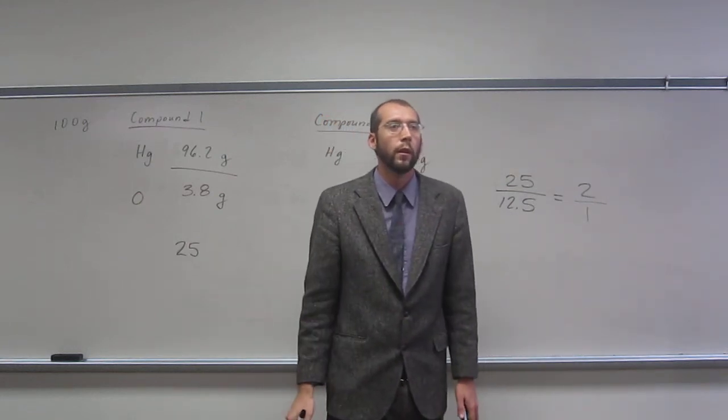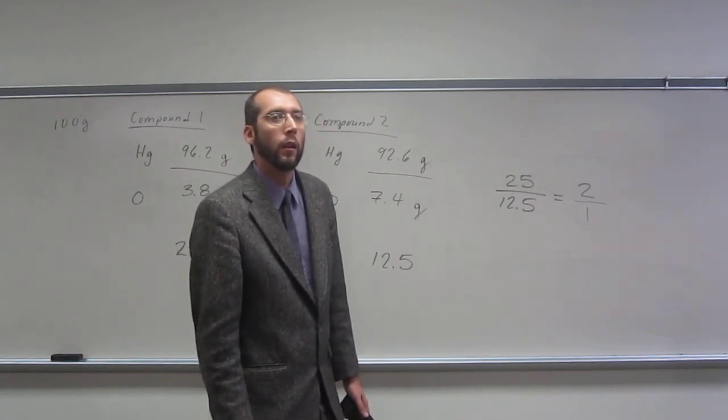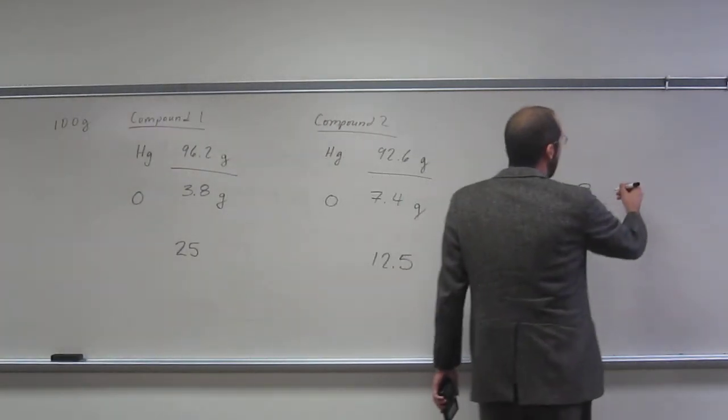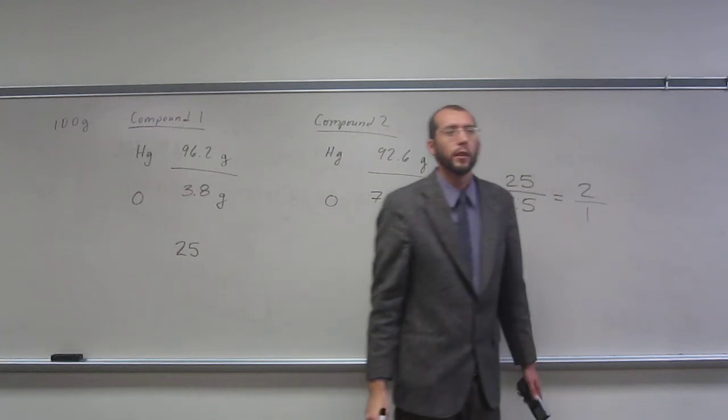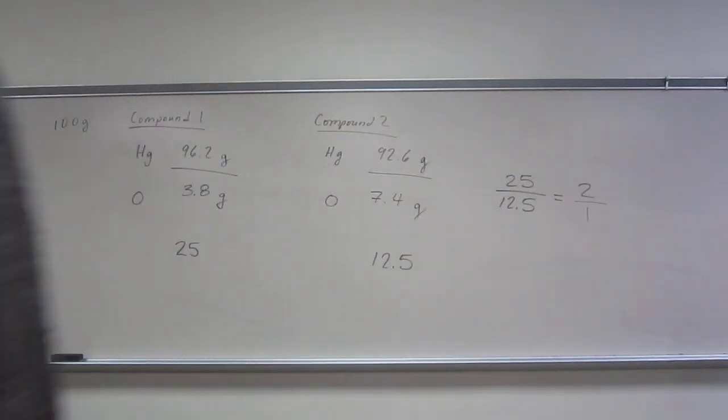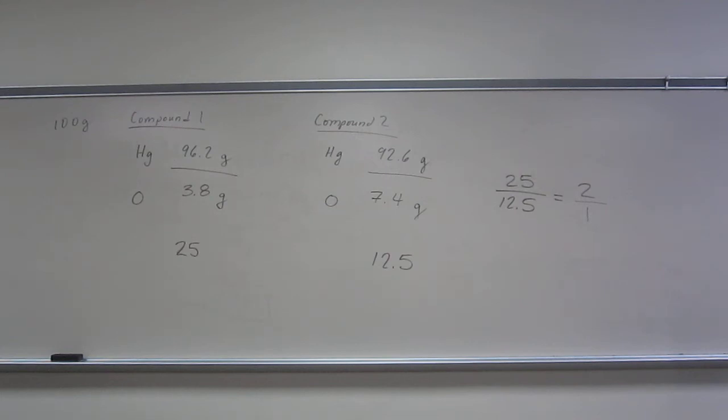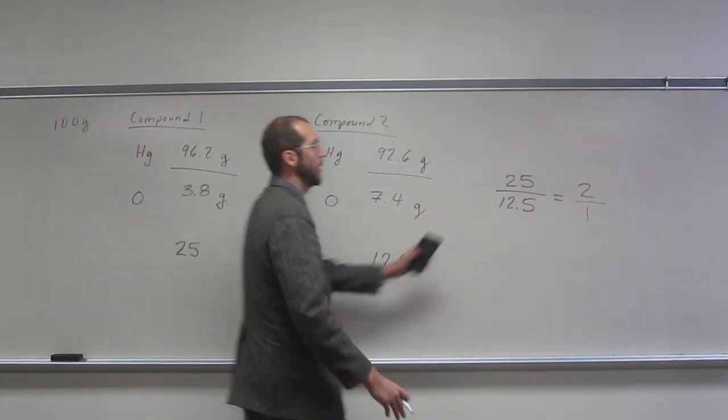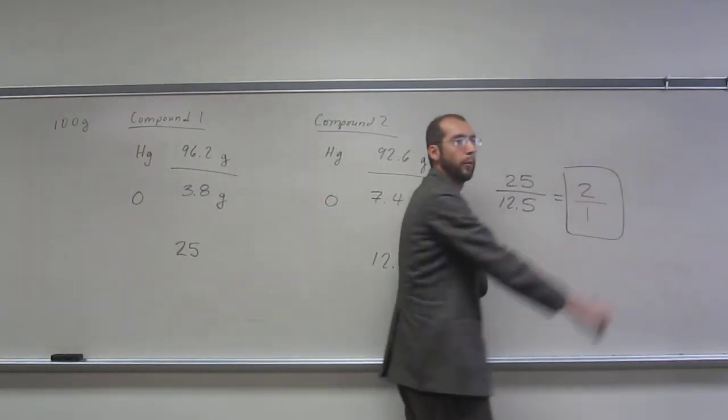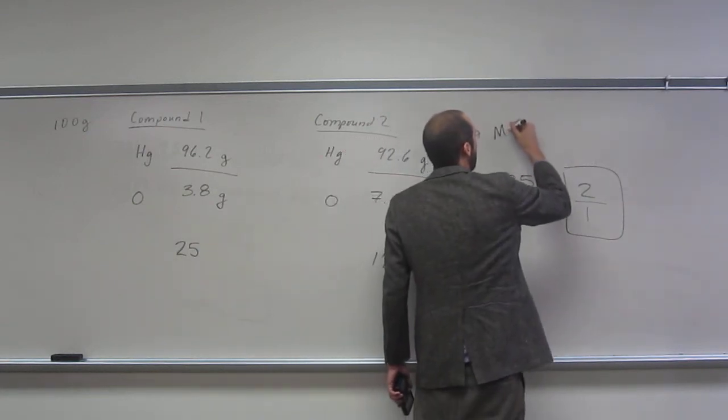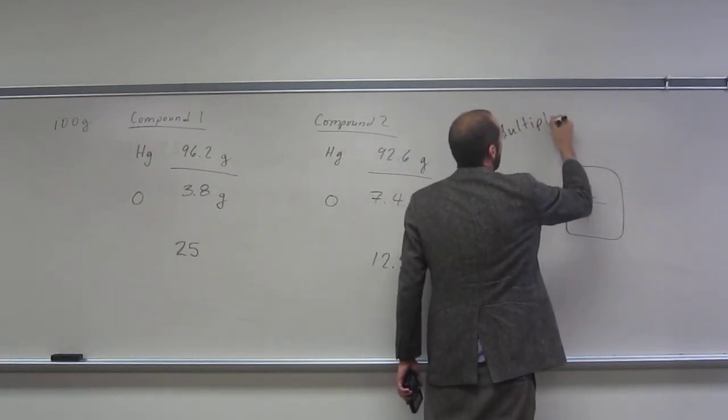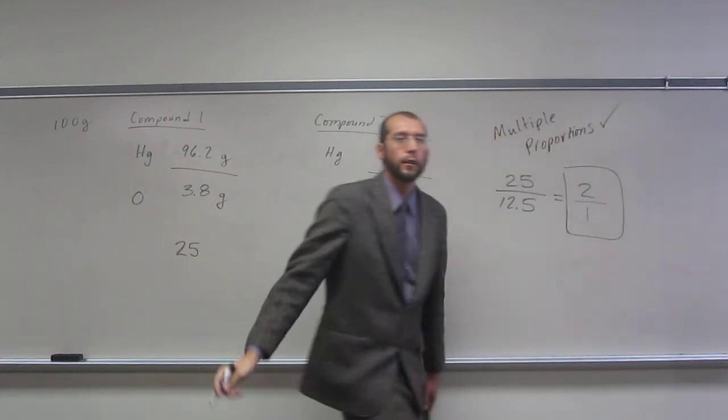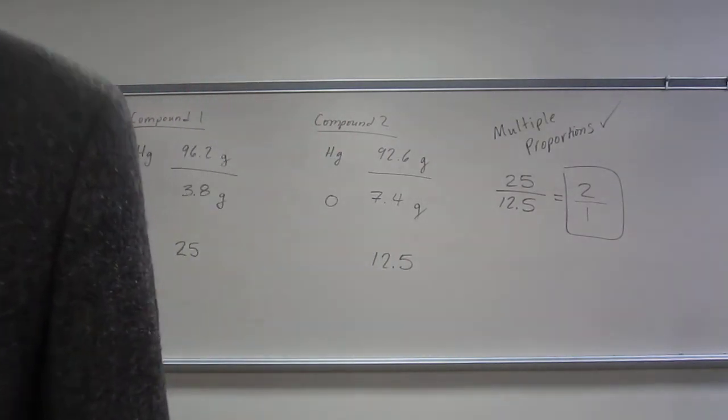So do we need to write Hg and O next to it like 2 Hg and O? No, just say compound 1 or compound 2. It's not that big of a deal. I think the more important thing is that you show that these two numbers divided by each other give you that simple whole number ratio. And then once you get that, then you can say that it checks off that it does conform to the law of multiple proportions.